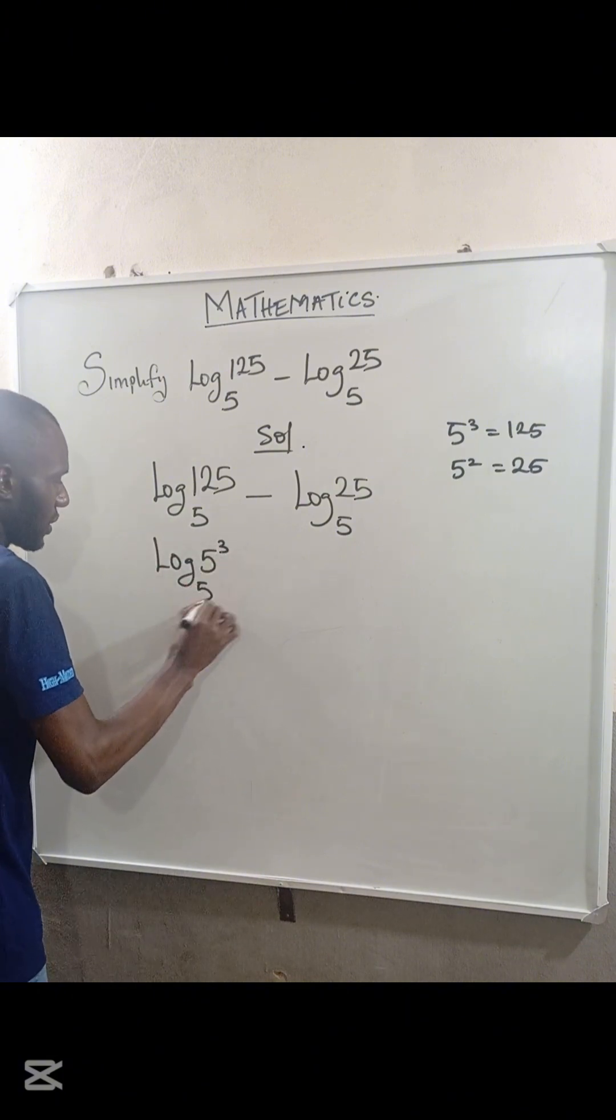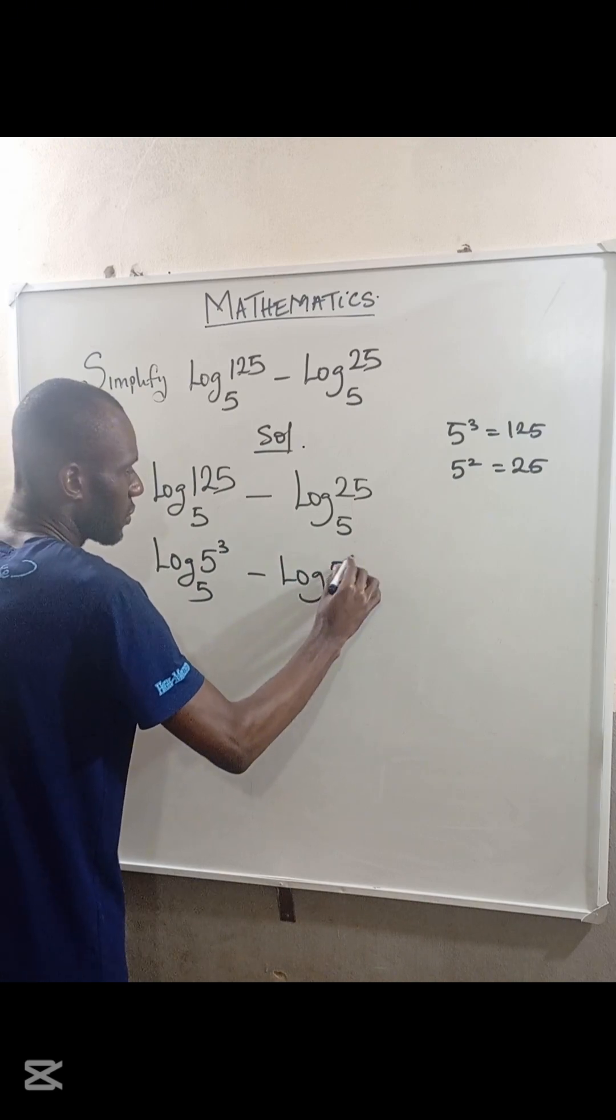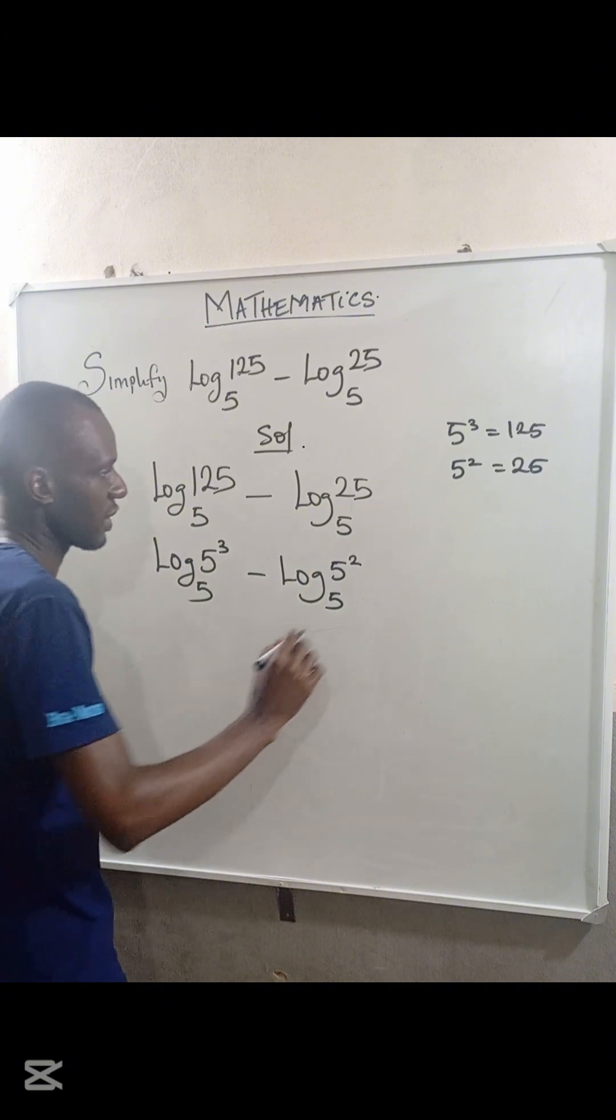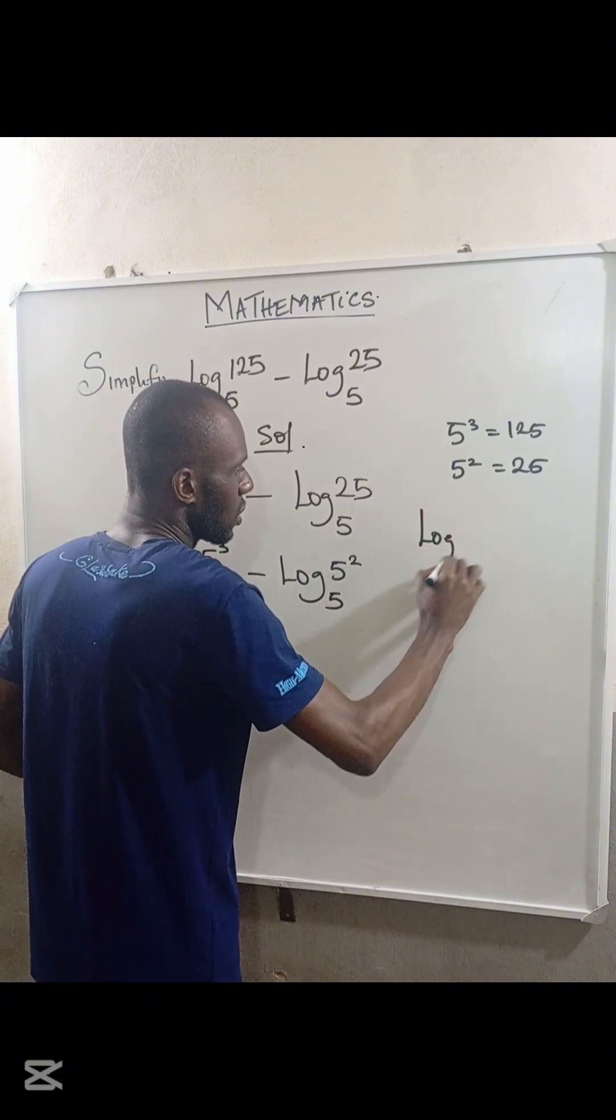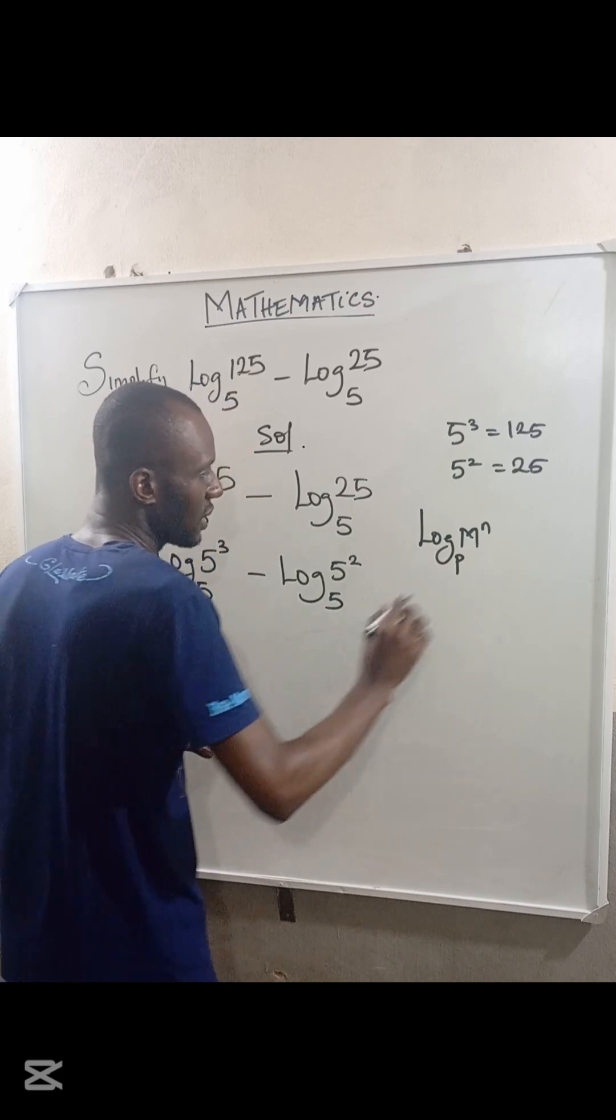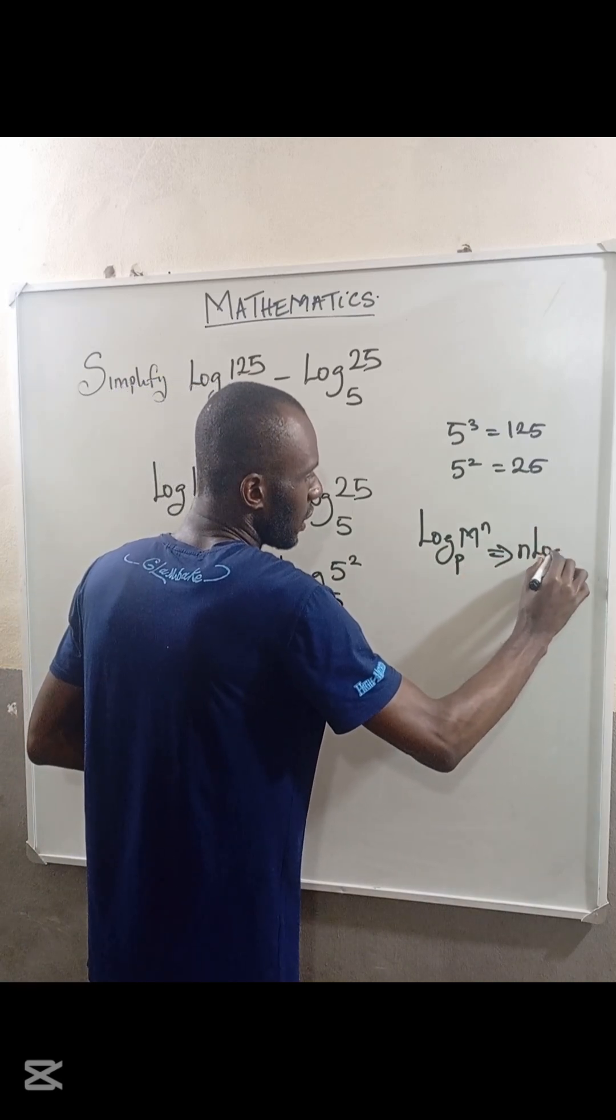Recall that if we have log of n to the power m in base p, this can be expressed as m multiplied by log n in base p.